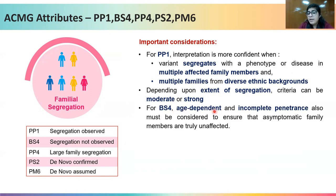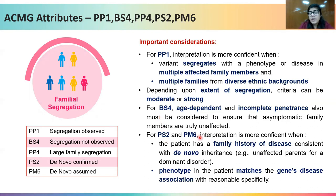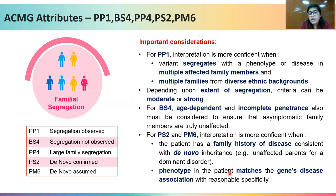For BS4, one should not ignore age-dependent and incomplete penetrance to ensure that asymptomatic family members are truly unaffected before assigning the BS4 criteria. For PS2 and PM6, interpretation is more confident when the patient has a family history of disease consistent with de novo inheritance — meaning the parents are unaffected for a dominant disorder — and the phenotype in the patient matches the gene-disease association with reasonable specificity.